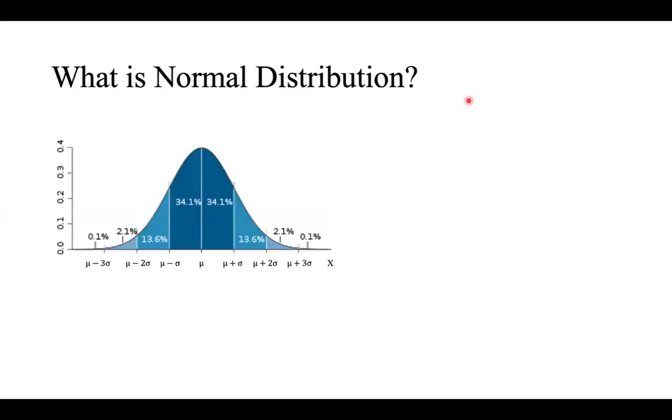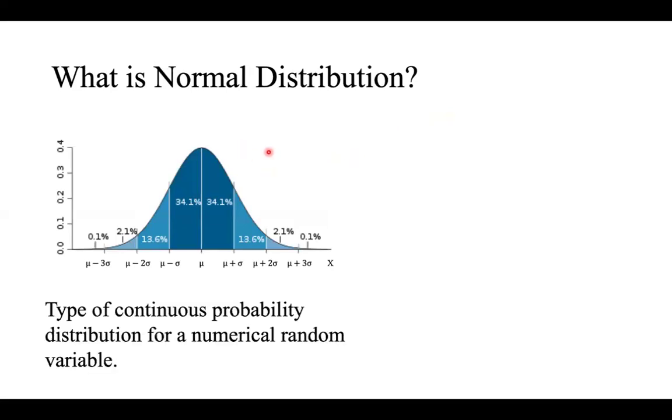We'll go through the normal distribution. So what is it? We see a graph here, and it shows a type of continuous probability distribution for a numerical random variable.